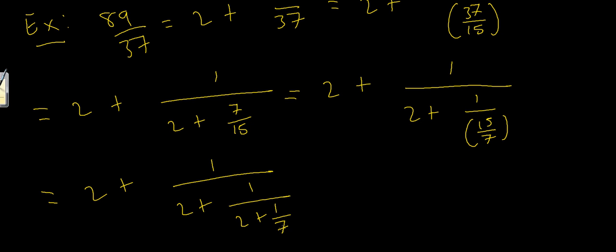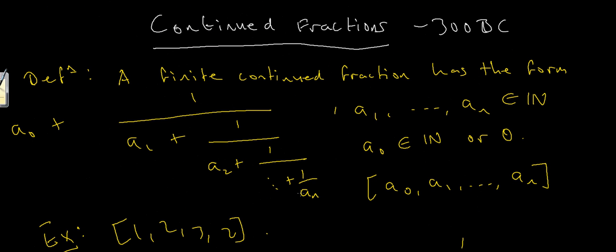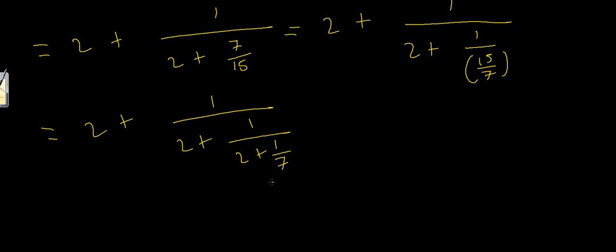And this right here is where we stop, because as I showed in my definition, our last term should be of the form 1 over an. And right here, our an term is 7, and we've got 1 over 7 as our last term.